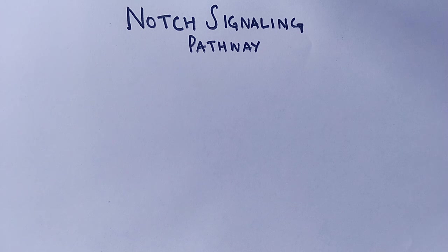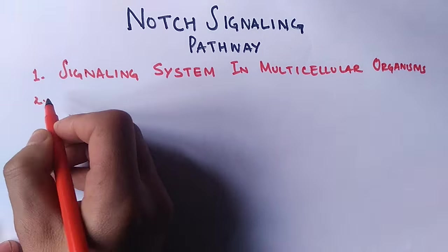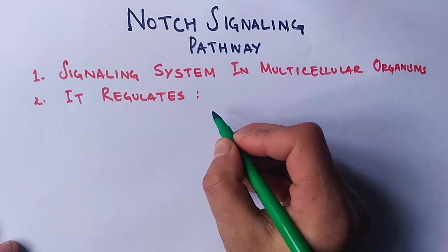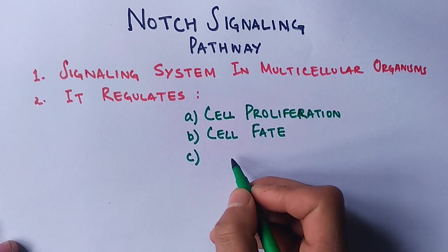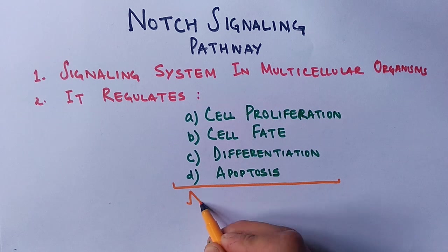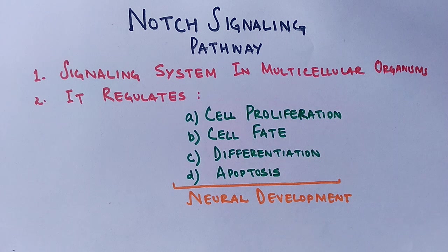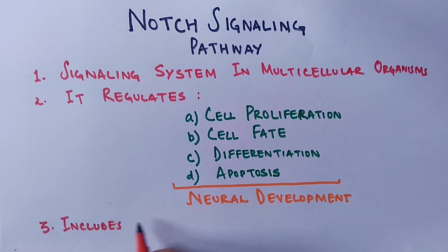It's a signaling system in multicellular organisms that regulates cell proliferation, cell fate, differentiation, and apoptosis. It all happens in an embryo during the process of neural development.